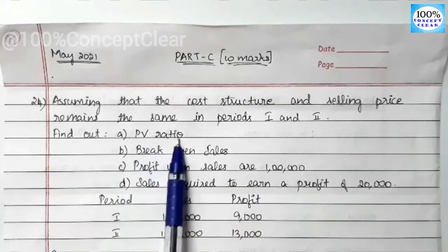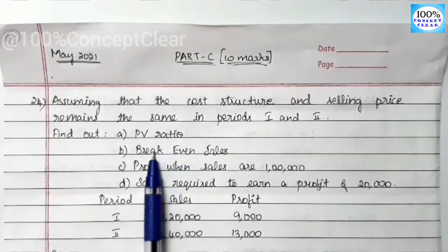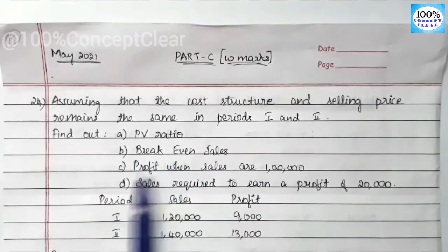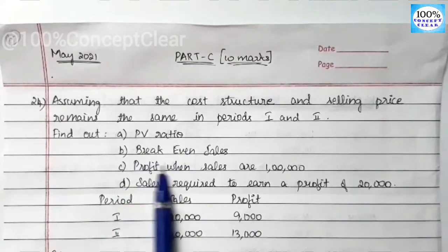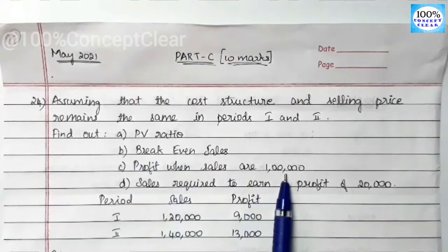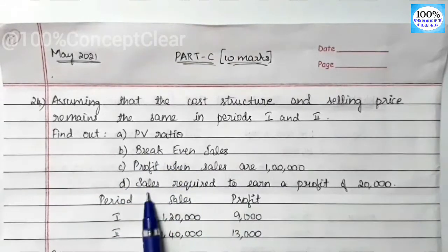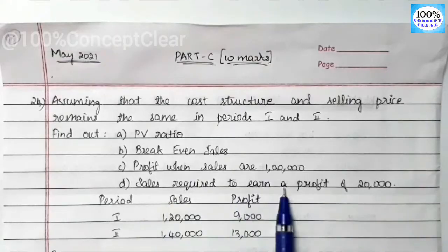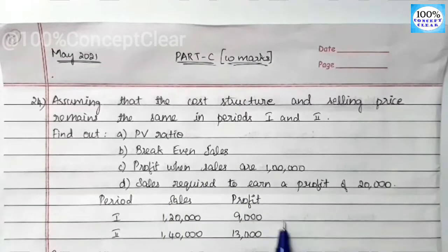The four questions are: first, PV ratio; then break-even sales; then profit when sales are 1 lakh; and finally, sales required to earn a profit of 20,000.